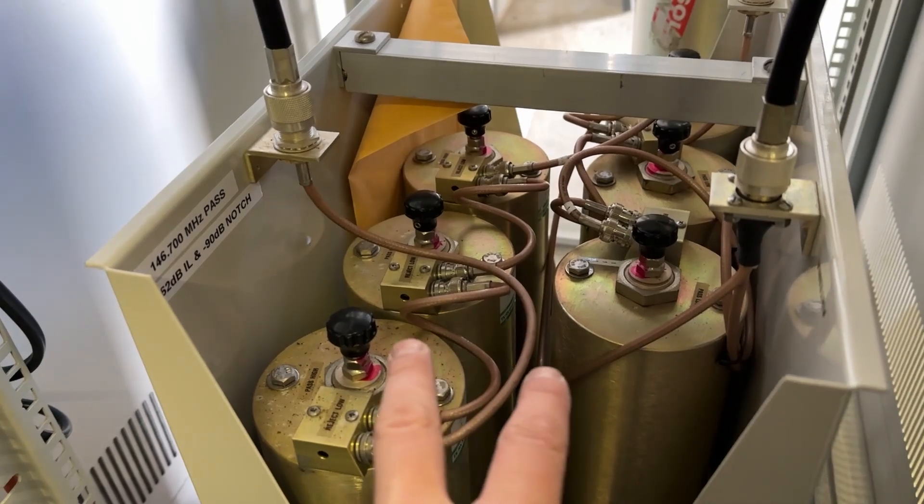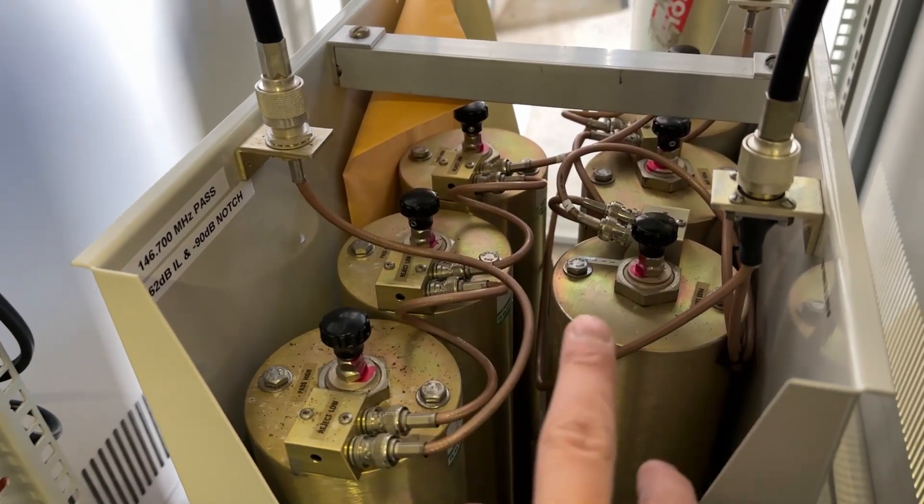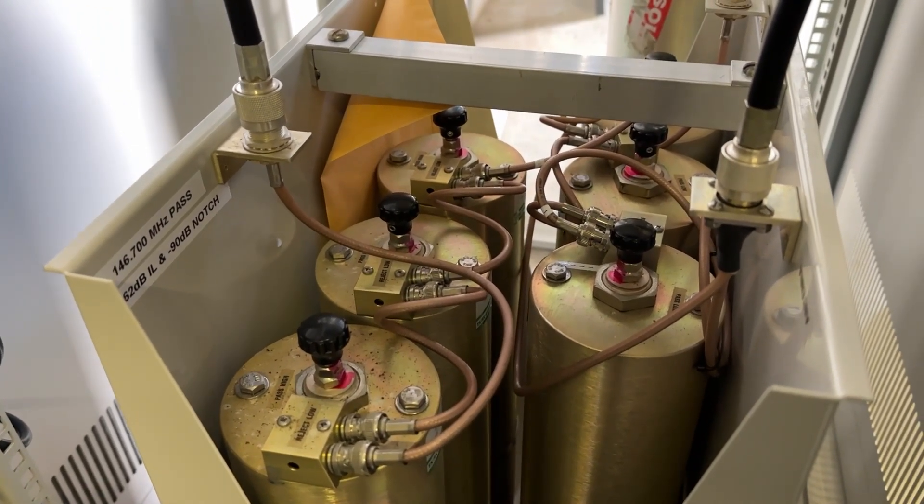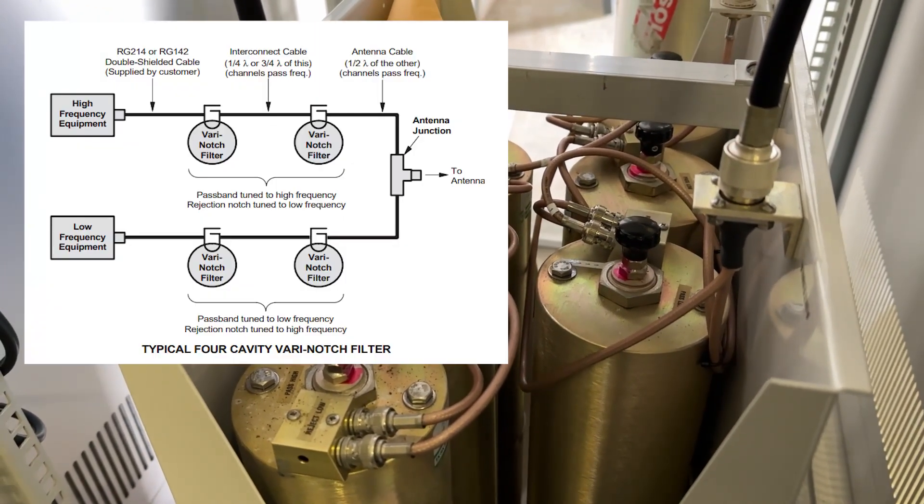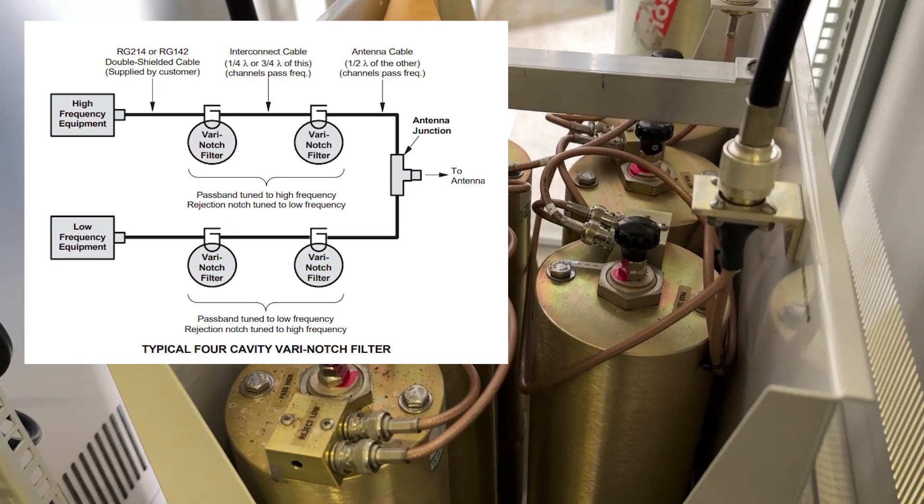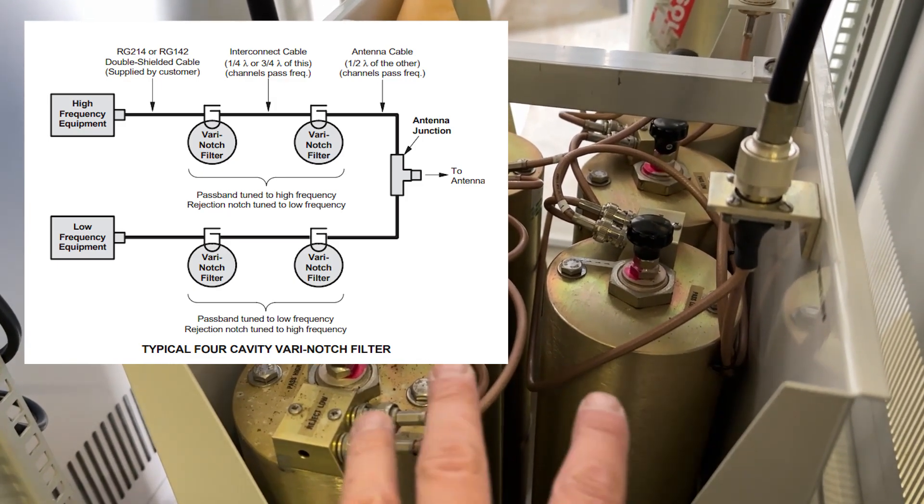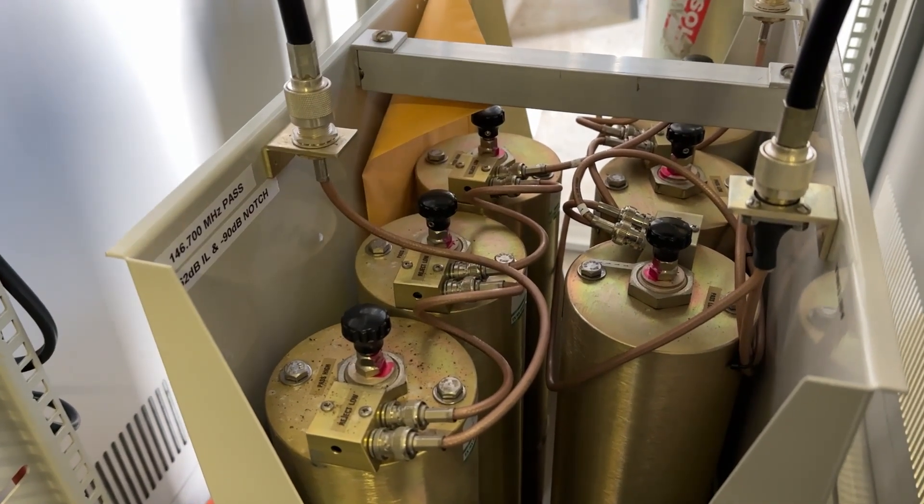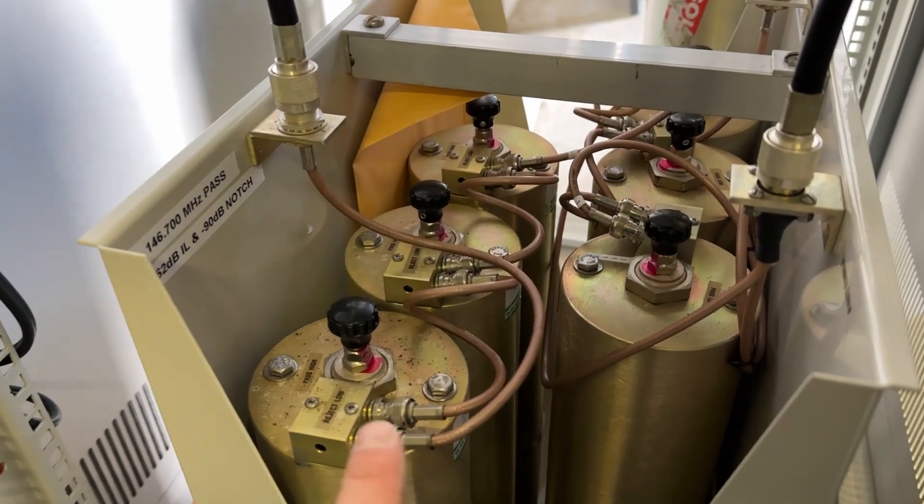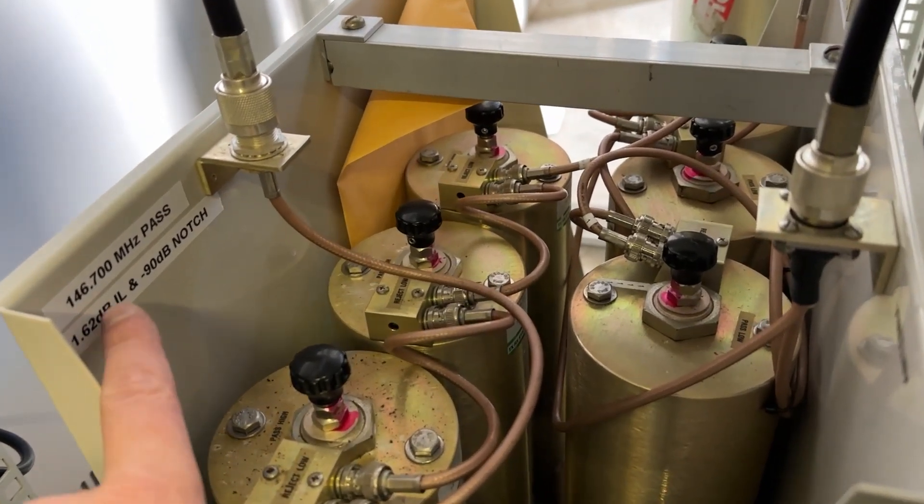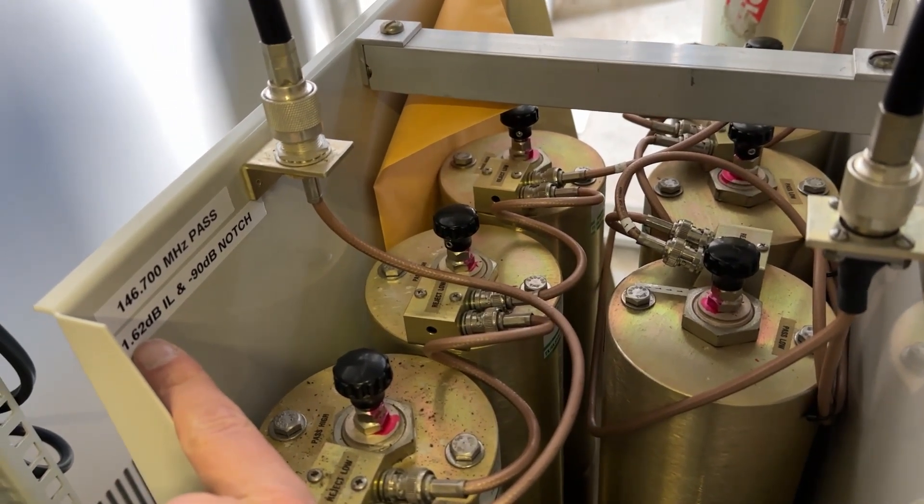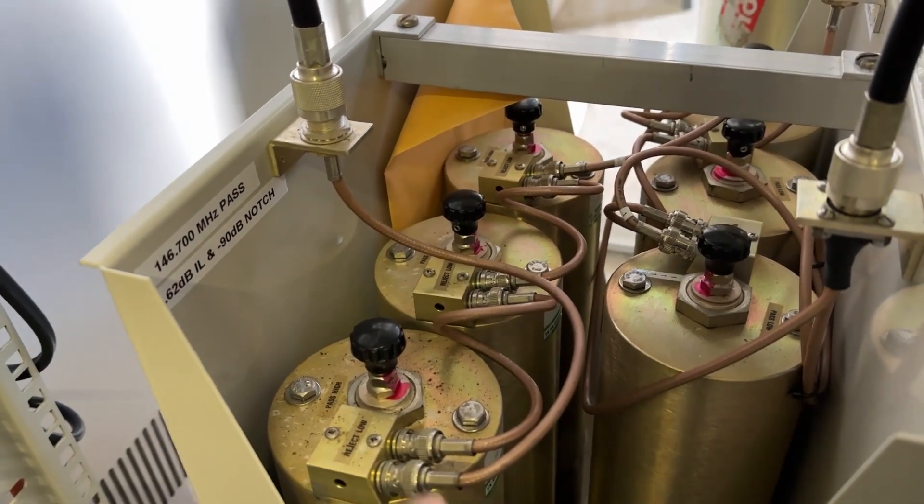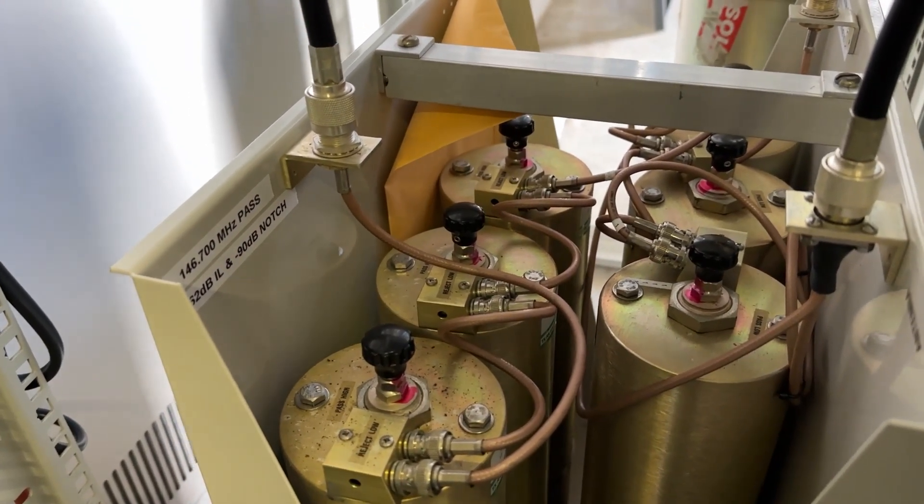So what this does is isolates basically the transmitter from the receiver so that you don't get desense. So what happens is if you transmit on 146.700 and you're listening on 146.1, it can completely wipe out the receiver. So we need these filters in a repeater system to be able to notch one out from the other. We get a little bit of insertion loss as well. So on our transmit side we've got 1.62 dB of insertion loss, but we get 90 dB of notch on our other side which is pretty good.